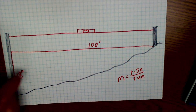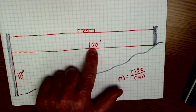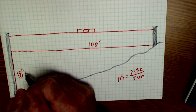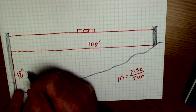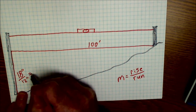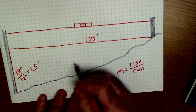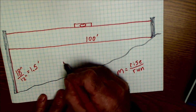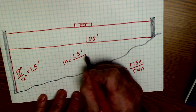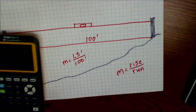My units have to be the same. So if this is in inches, this right here has to be in inches, or this has to be in feet — but my units have to be the same. 18 inches is 18 over 12 inches. My inches cancel and it gives me 1.5 feet. So my slope here for rise over run — my slope is 1.5 feet over a hundred feet. So that's going to be my slope right there.